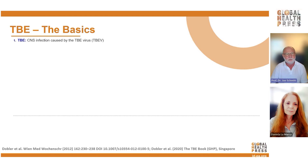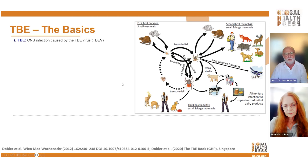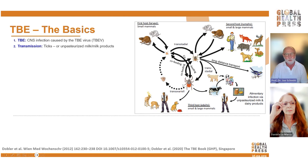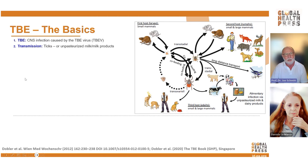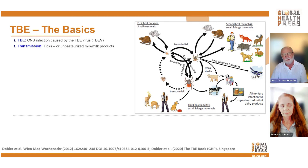Tick-borne encephalitis is an infection of the central nervous system caused by a virus — the TBE virus. The life cycle of this virus is very complex. The important point is that the main vector for transmission are ticks. In addition, ticks sometimes infect animals, and if this happens during the stage of viremia, the virus may pass into cow milk and you may then be infected by dairy products.